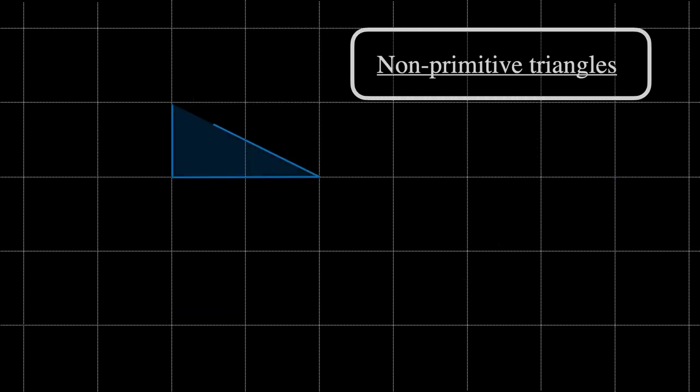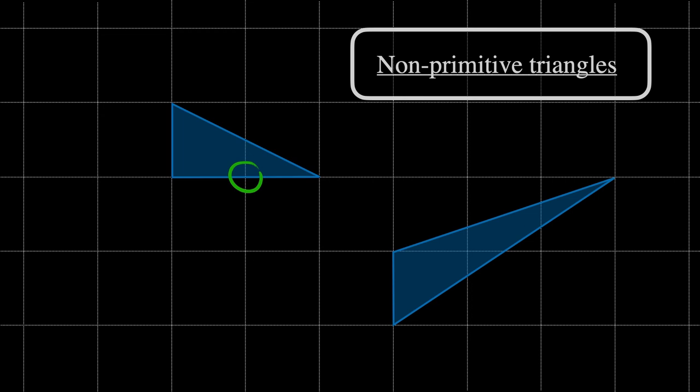This isn't a primitive triangle since there is a lattice point on the boundary of the triangle which isn't at a corner. This isn't a primitive triangle either since it has a lattice point in its interior.